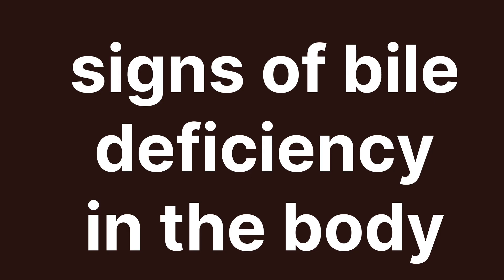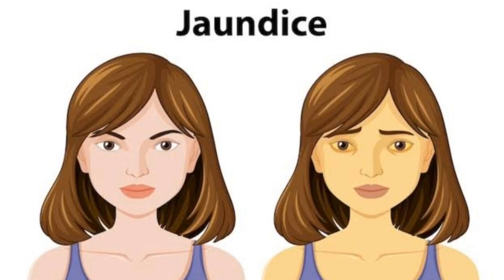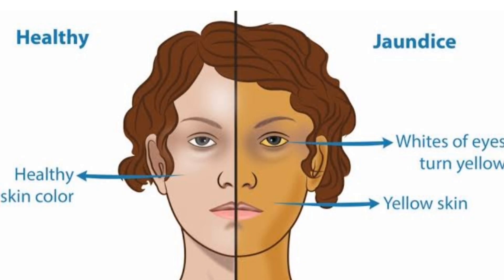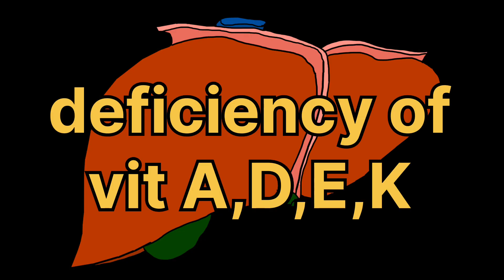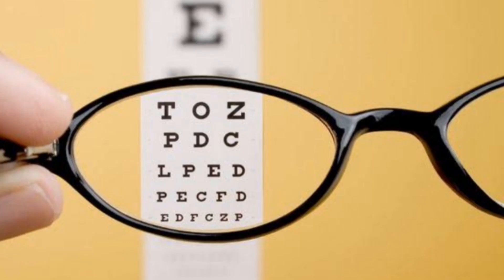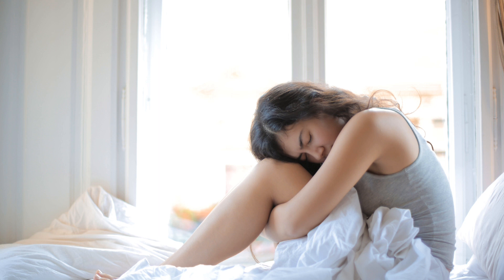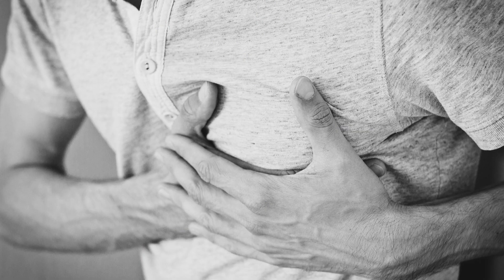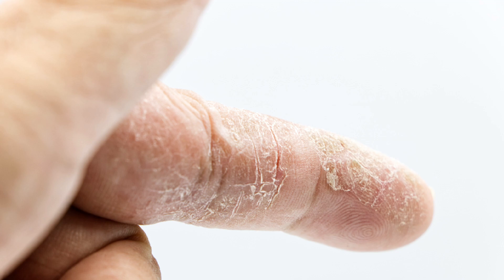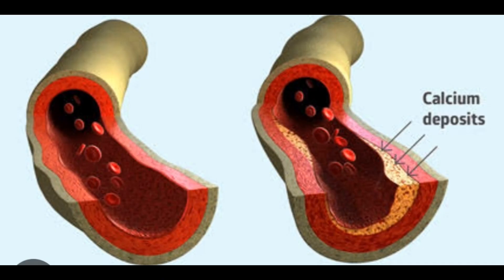Signs of bile deficiency in the body. One, jaundice: the whites of your eyes look yellow due to accumulation of bile pigment when the bile duct becomes blocked. Two, deficiency of vitamins A, D, E and K: vitamin A deficiency leads to vision impairment; vitamin D deficiency leads to joint pain, lowered mood and depression; vitamin E deficiency shows dry skin, chest pain, psoriasis and weak muscles; vitamin K deficiency shows bruising, kidney stones, high blood pressure and calcified arteries.